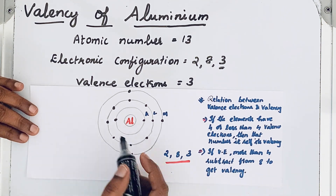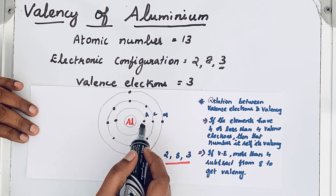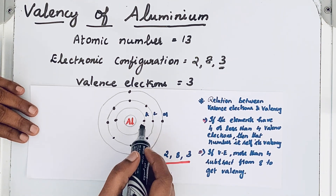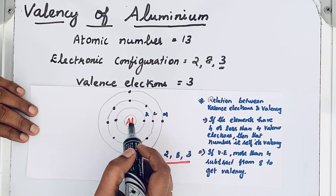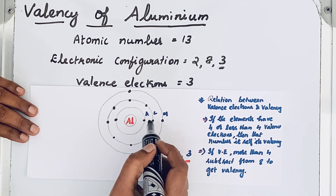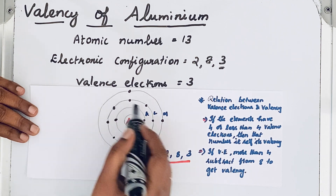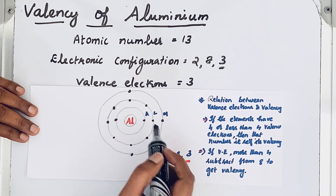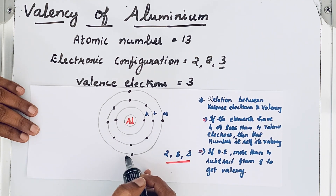Here you can see that in aluminium there are three shells: K, L, and M. There are two electrons in the K shell, eight electrons in the L shell, and only three electrons in the M shell.